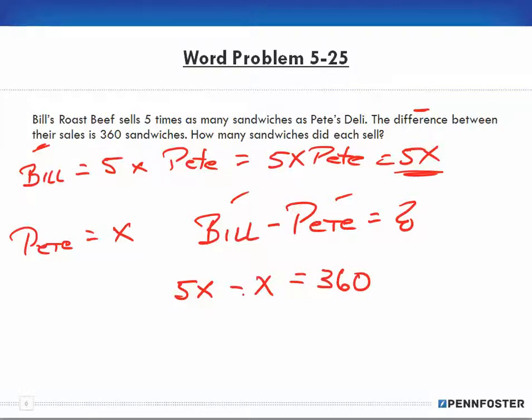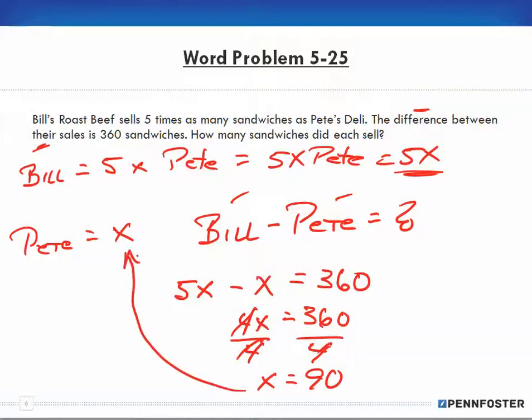So if Bill is 5x and Pete is x, and the difference between their sales is 360, we have 5x minus x equals 360. 5x minus 1x is 4x equals 360. We isolate the x by dividing both sides by 4, so x ends up being 360 divided by 4, which is 90. So Pete sells 90 sandwiches and Bill is 5 times 90, which would be 450.